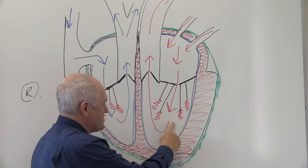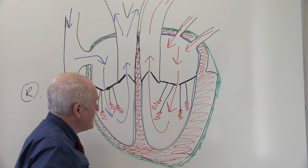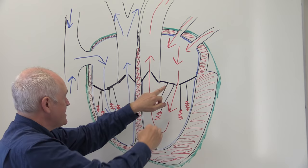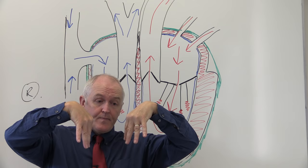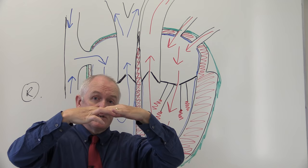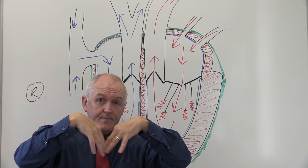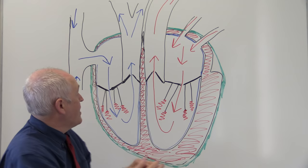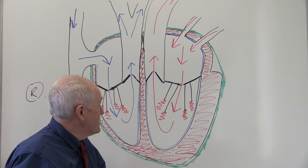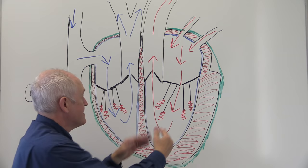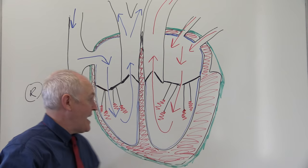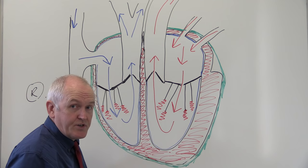Decreasing the volume increases the pressure of blood in the left ventricle. Because the atrioventricular mitral valve points downward, the increased pressure in the ventricle below slams that valve shut. It can't open upward into the atria because the tendinous cords and papillary muscles prevent it. The ventricle contracts, the pressure increase slams the valve shut, and that prevents regurgitation into the atria, which would be a pathological situation.